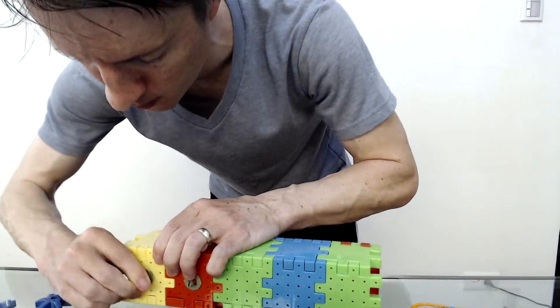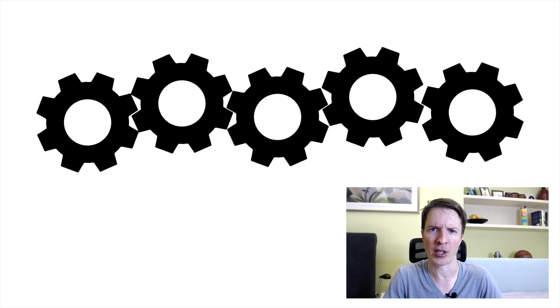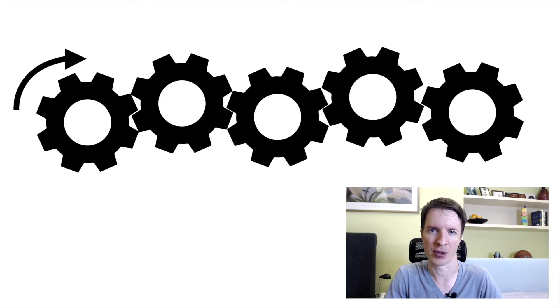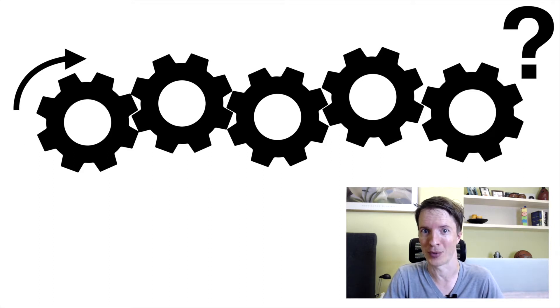Today we are going to talk about what gears have to do with solving problems. But before we get to that, we're going to solve a couple of problems ourselves. So we have five gears here. Now if we turn the first gear clockwise, what is going to happen to the last gear in the row? If the answer isn't immediately obvious to you, pause the video and give this problem just a quick shot because I am going to spoil the answer.